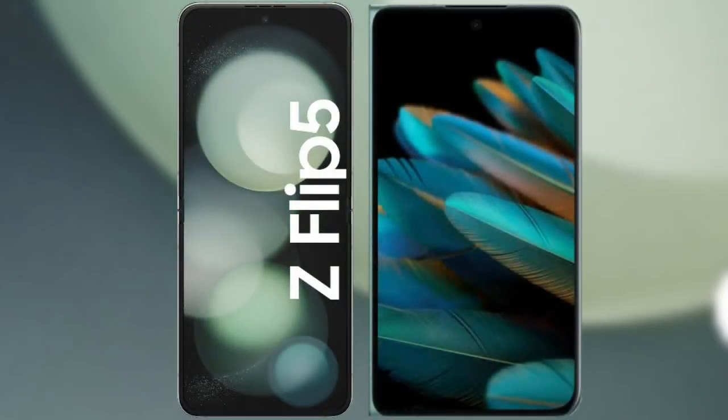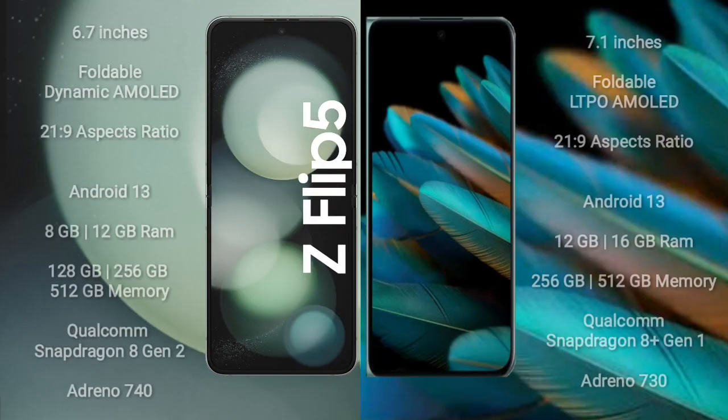I will compare the new Samsung Galaxy Z Flip 5 with Oppo Find N2. Samsung Galaxy Z Flip 5 comes with a 6.7-inch foldable Dynamic AMOLED display and aspect ratio 21:9. Oppo Find N2 comes with a 7.1-inch foldable LTPO AMOLED display and aspect ratio 18:9.